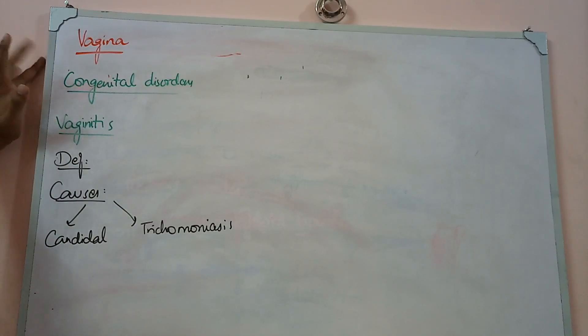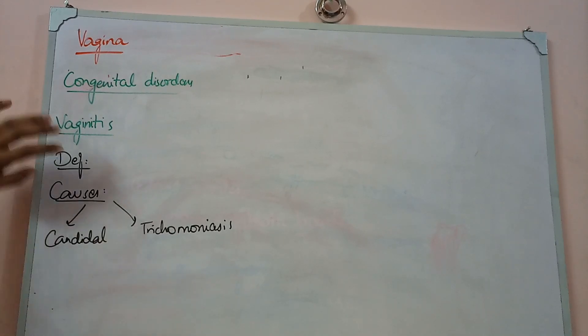We have an external opening of the female genital system that is basically the vagina. Primary disease is not as common here as in the cervix or other areas. There are inflammatory diseases and cancers, but vagina is less commonly involved. Three types of diseases include congenital disorders, inflammatory disorders, and neoplastic.